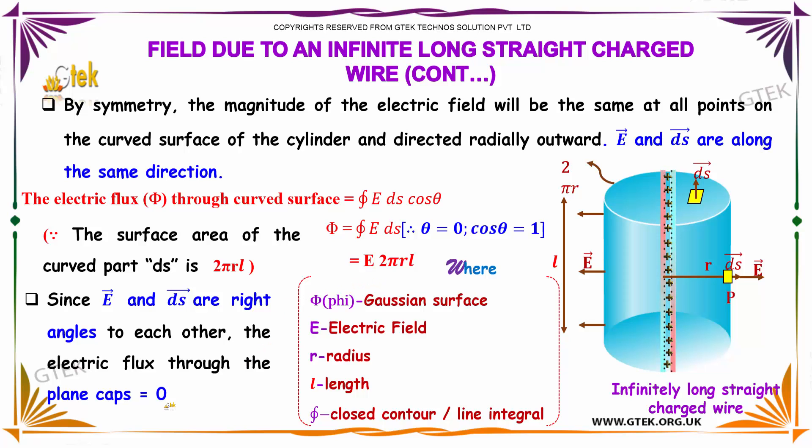Since E and ds are at right angles to each other, the electric flux through the plane caps will be equal to 0. This is why we substitute 0 for the flux through the plane caps.